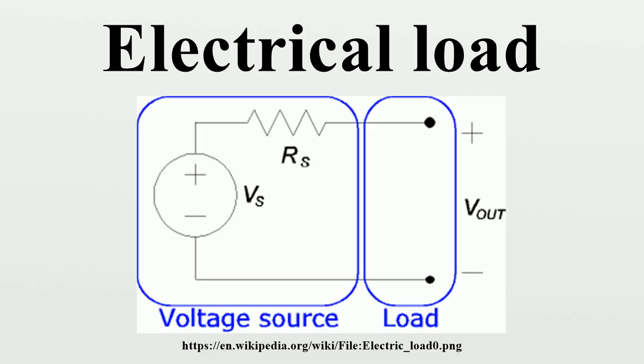Mains power outlets provide an easy example. They supply power at constant voltage, with electrical appliances connected to the power circuit collectively making up the load. When a high-power appliance switches on, it dramatically reduces the load impedance.